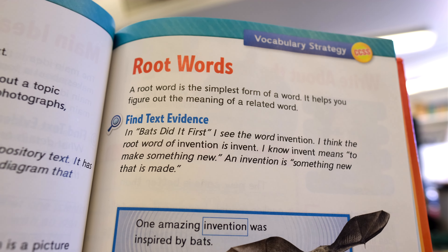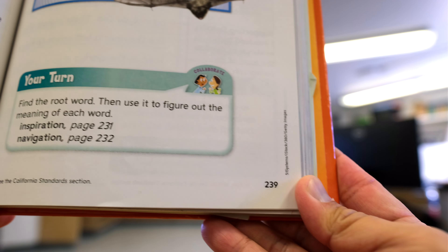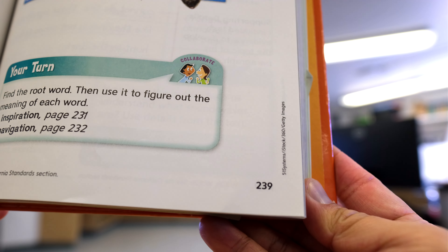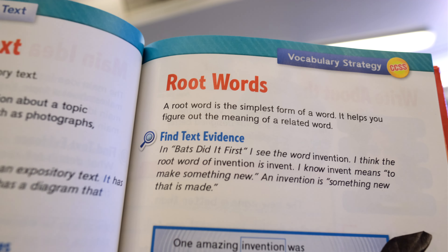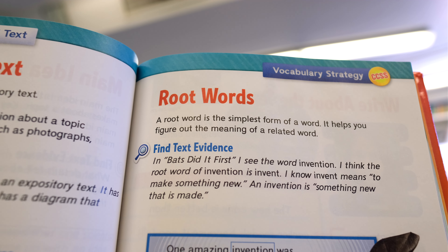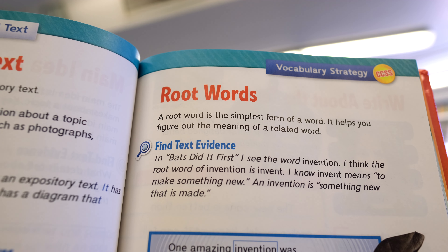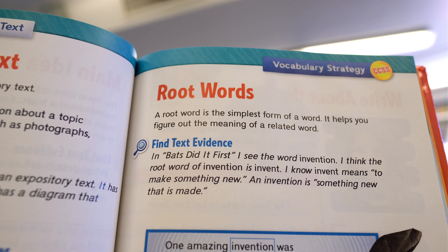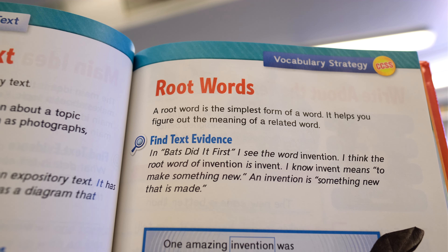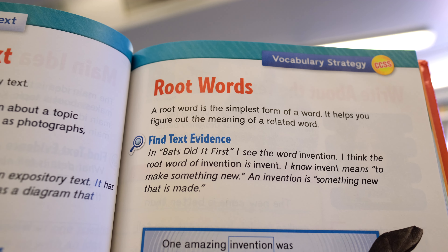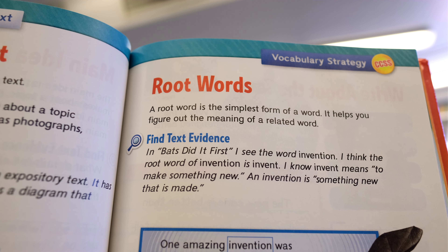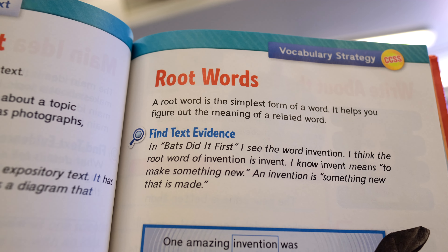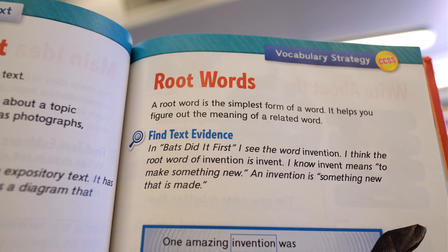Today we're going to be looking at root words. This is page 239 in the textbook. A root word is the simplest form of a word. It helps you figure out the meaning of a related word. Let's see what that means.